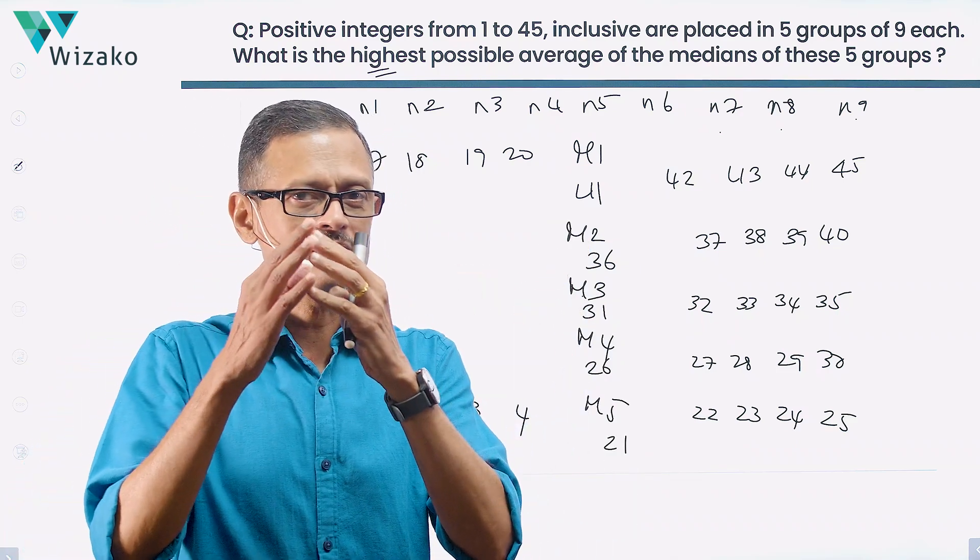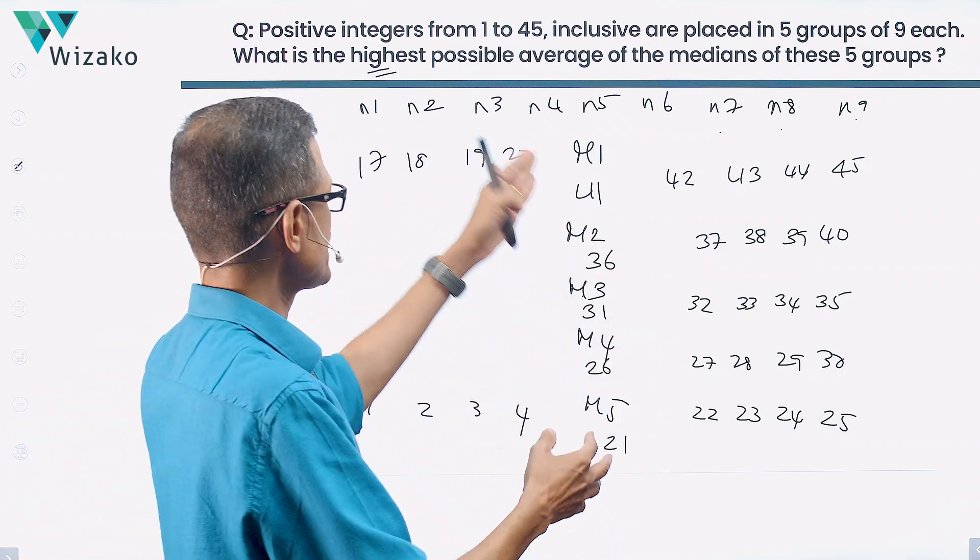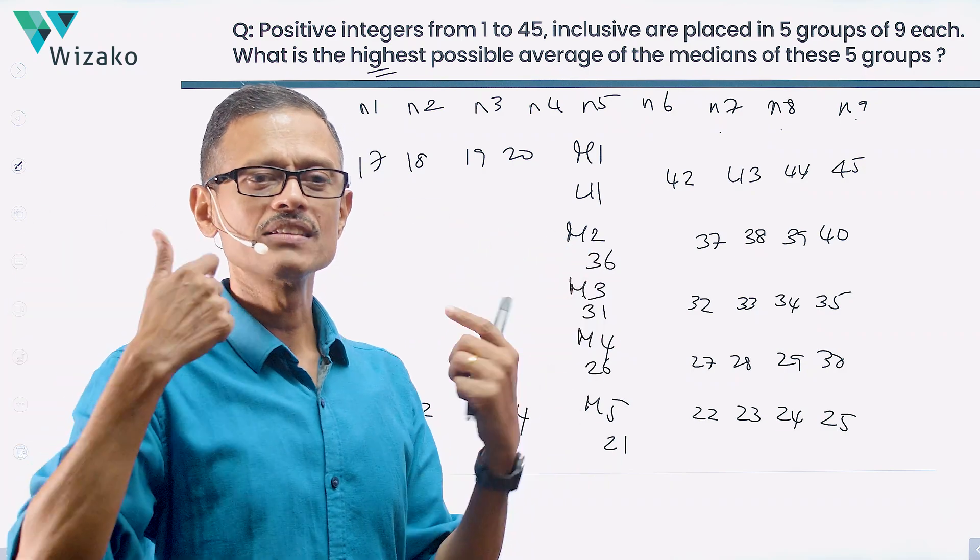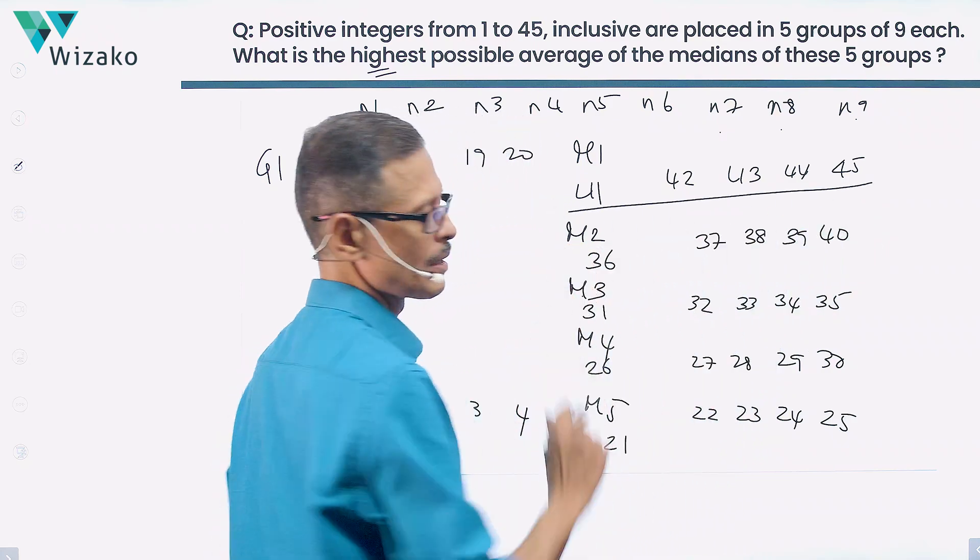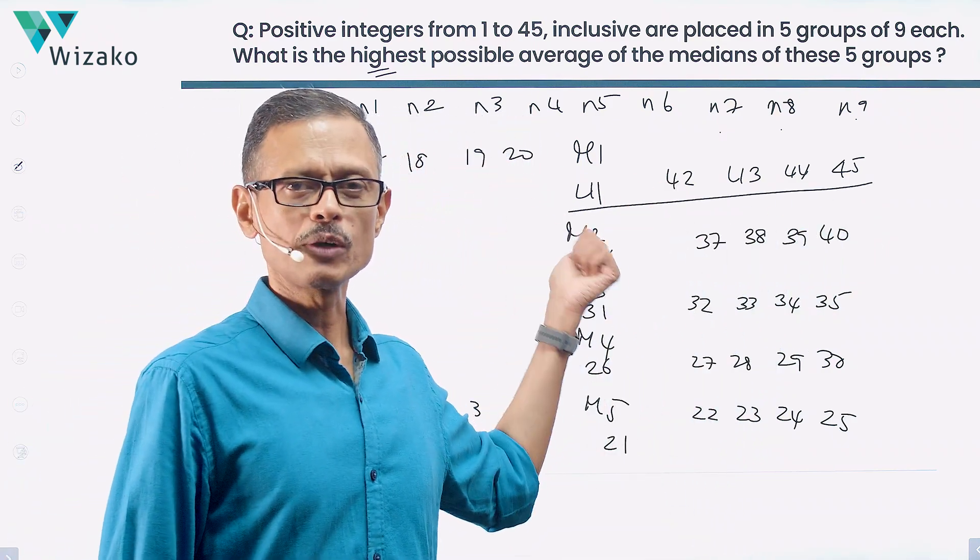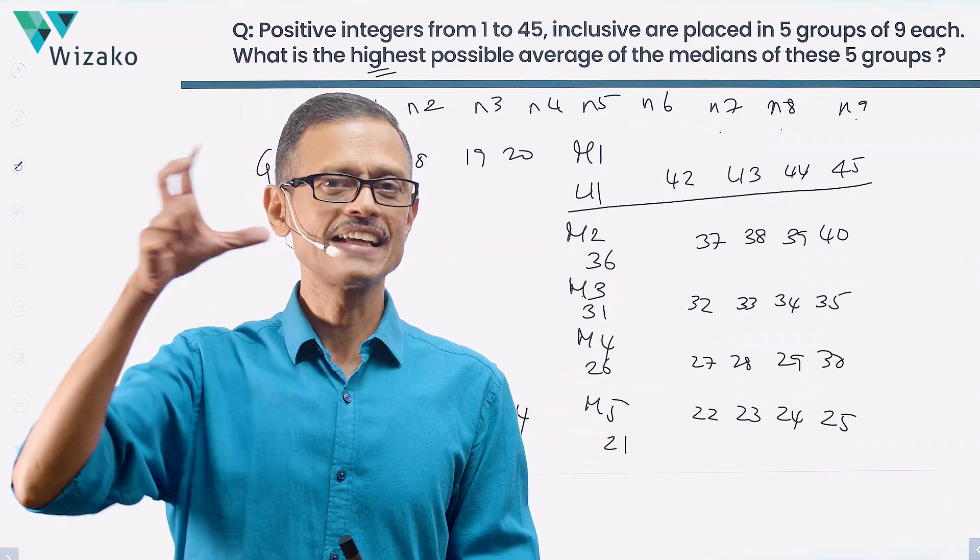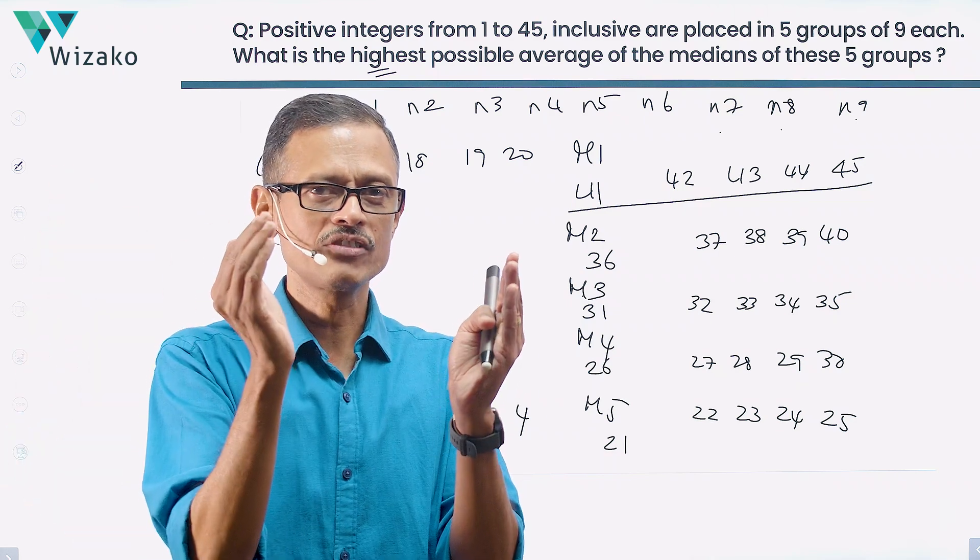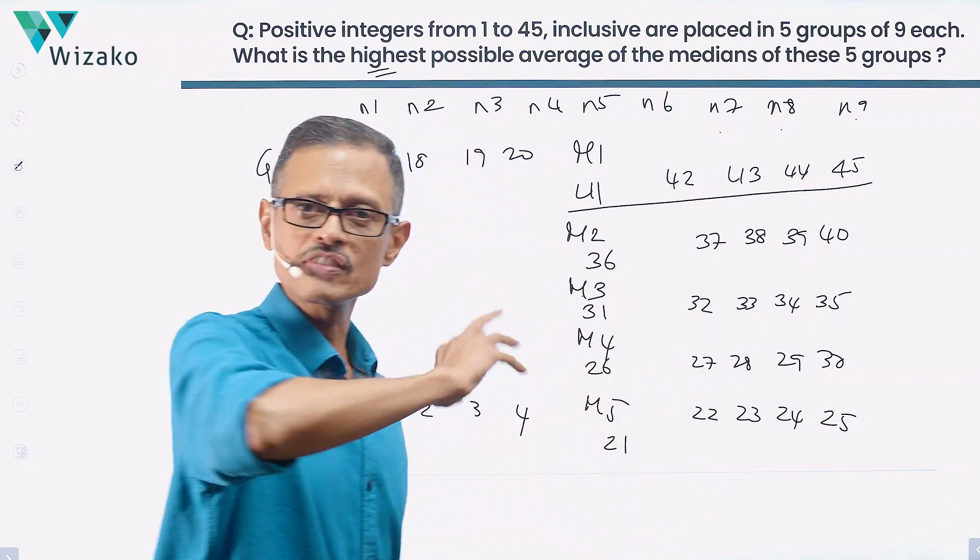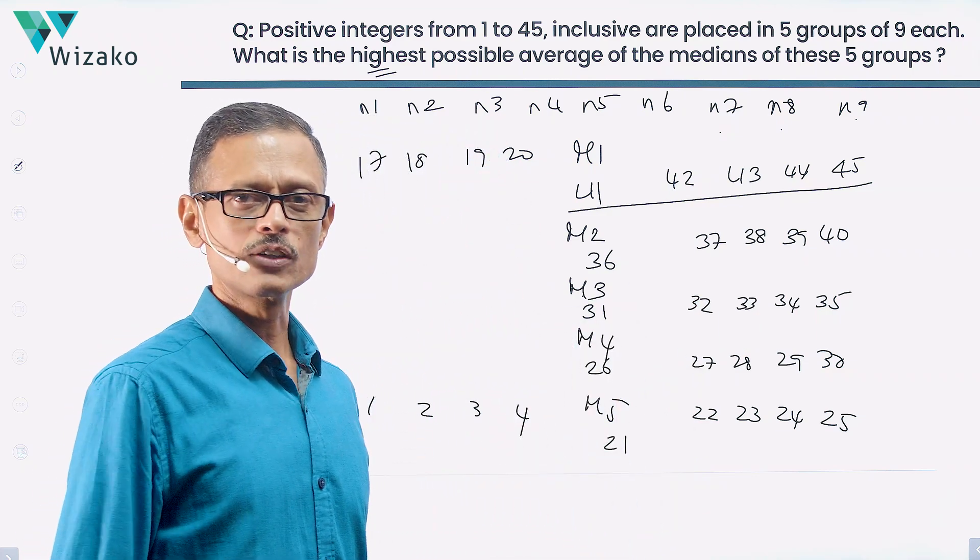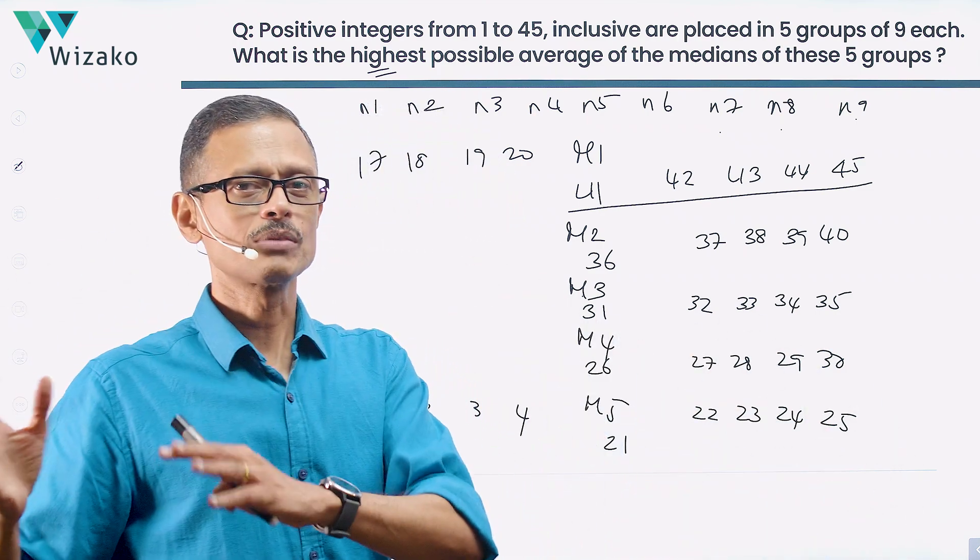So the idea is, we want to maximize the medians for each of these groups. The median gets maximized when we place the rightmost number starting from the median as high a value as possible. Pick the last first highest five numbers available, 41 to 45, for group one. Next group, pick the next available highest five numbers. We exhausted 41 to 45. We are left with 1 to 40. So 36 to 40 goes to a second group. 31 to 35 from the fifth number to the ninth number of the third group. 26 to 30, the fifth to the ninth number of the fourth group. And 21 to 25, the fifth to the ninth number of the last group.